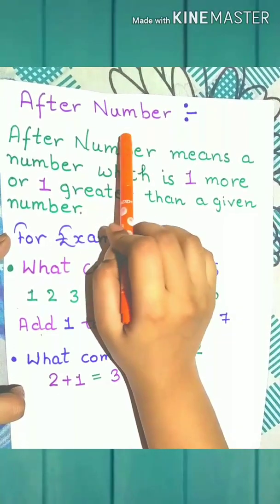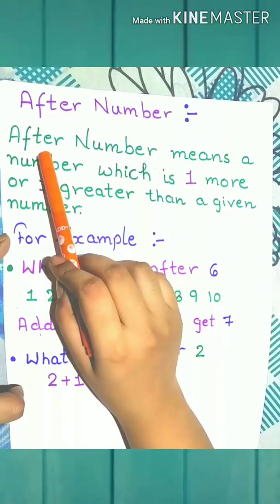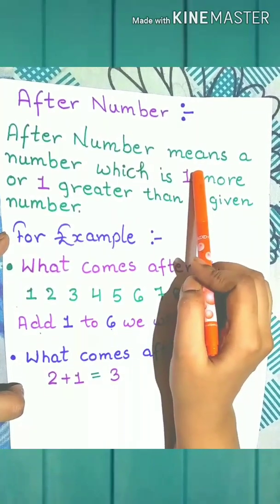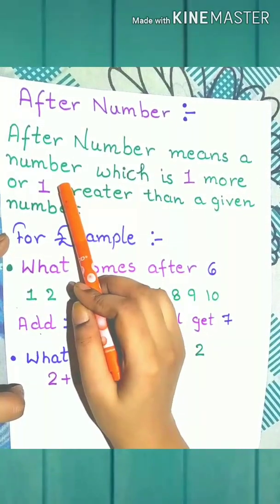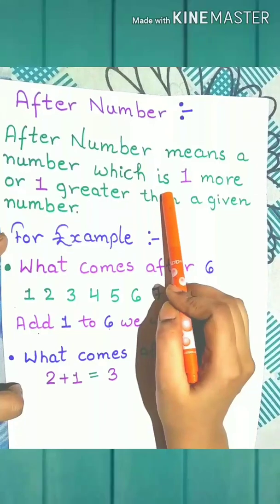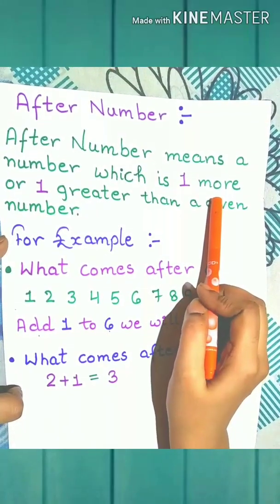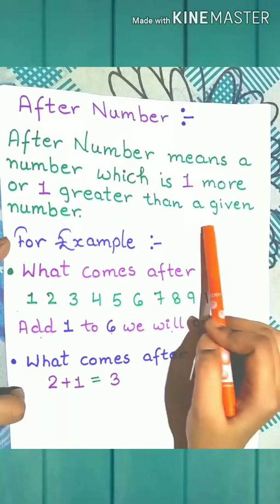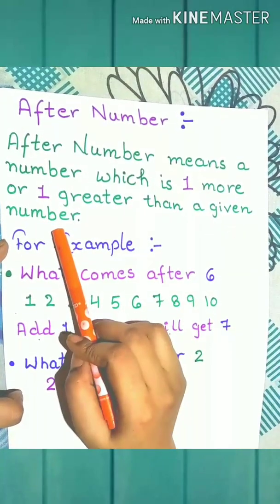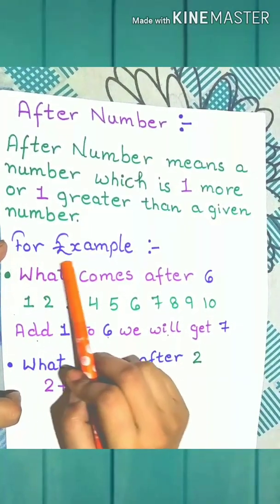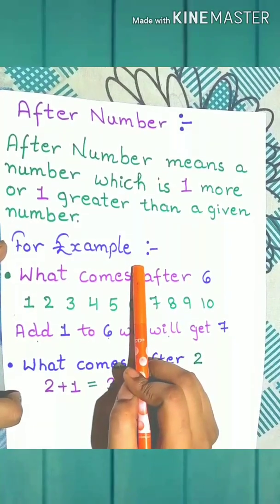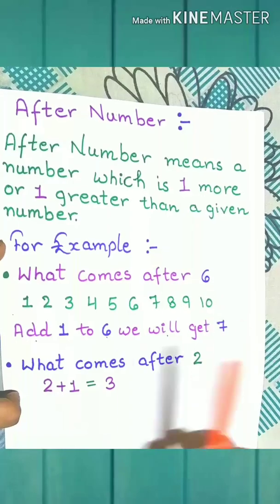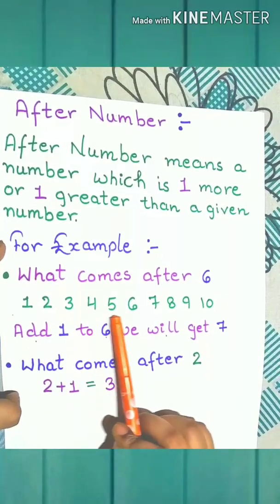After number. After number means a number which is one more or one greater than a given number. Let's understand with the help of an example. What comes after 6? First observe the number line.